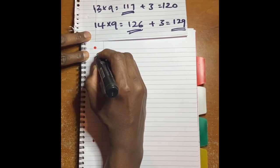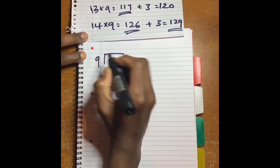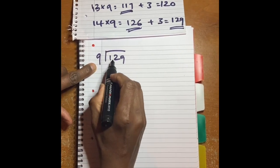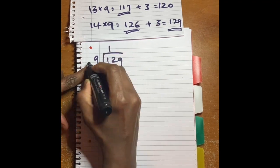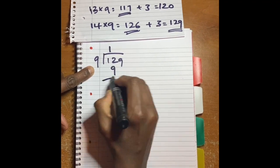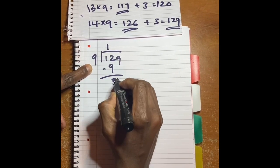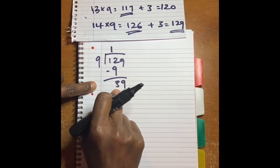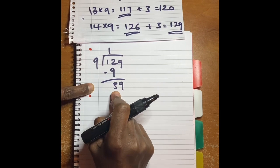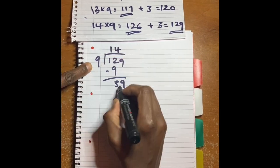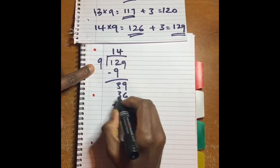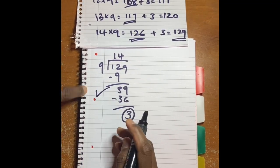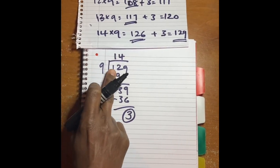Okay, let's say 129 divided by nine. Nine goes into one? Zero. Nine goes into twelve? One. Nine times one is nine. Drop down thirty-nine. How much has nine goes into thirty-nine? Four times nine is thirty-six. Remainder what? Three.